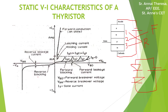It is called reverse blocking mode. If the reverse voltage is increased to a point called the reverse breakdown voltage, the current starts increasing in the reverse direction. This mode results in more losses in the SCR and can cause thyristor damage, as junction temperature may exceed its maximum level.